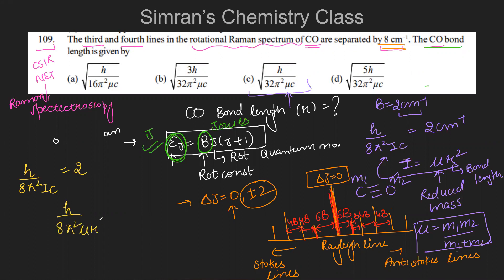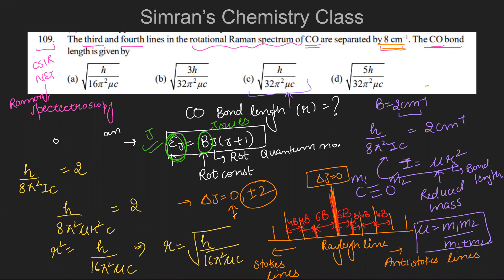Substituting I = μr² into h/(8π²μr²c) = 2, we solve for r²: r² = h/(16π²μc). Therefore, r = √(h/(16π²μc)). The units of r will be in cm since B was given in cm⁻¹. The correct answer is option A: r = √(h/(16π²μc)).